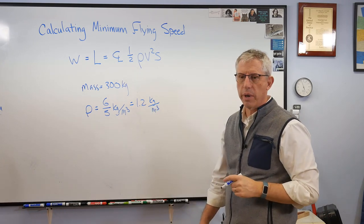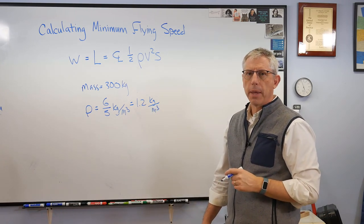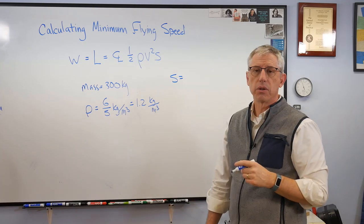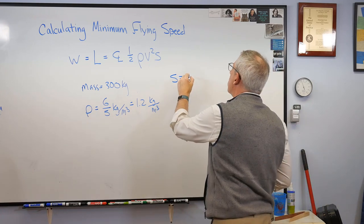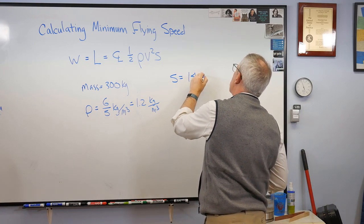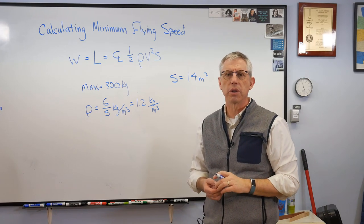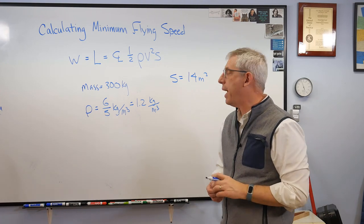We're going to need an area and that's area of both wings. And so I'm going to call that 14 square meters, which is about right. This is based on a couple of little airplanes I've looked at. And the last thing we need is CL max.